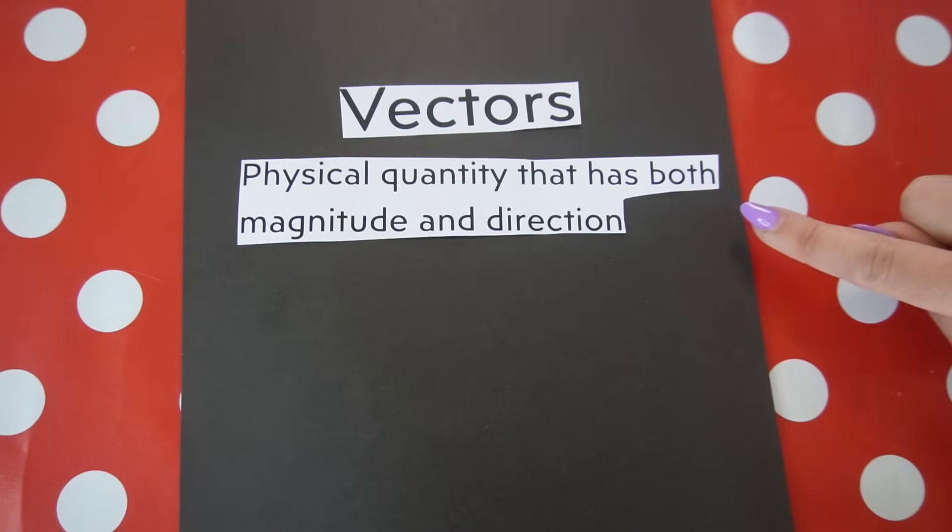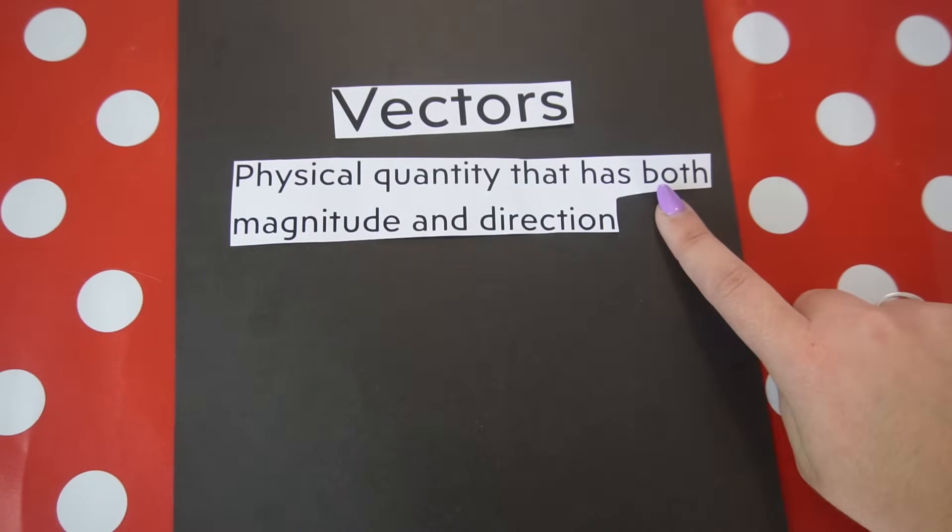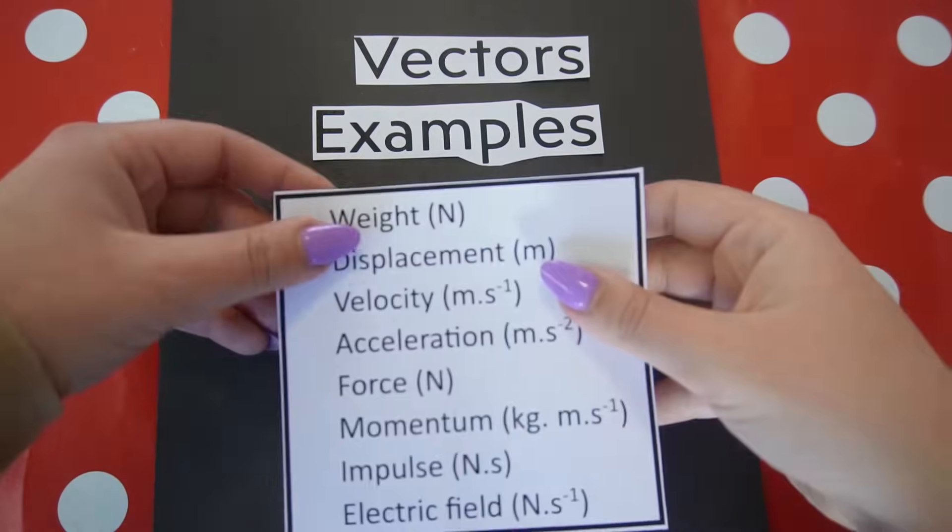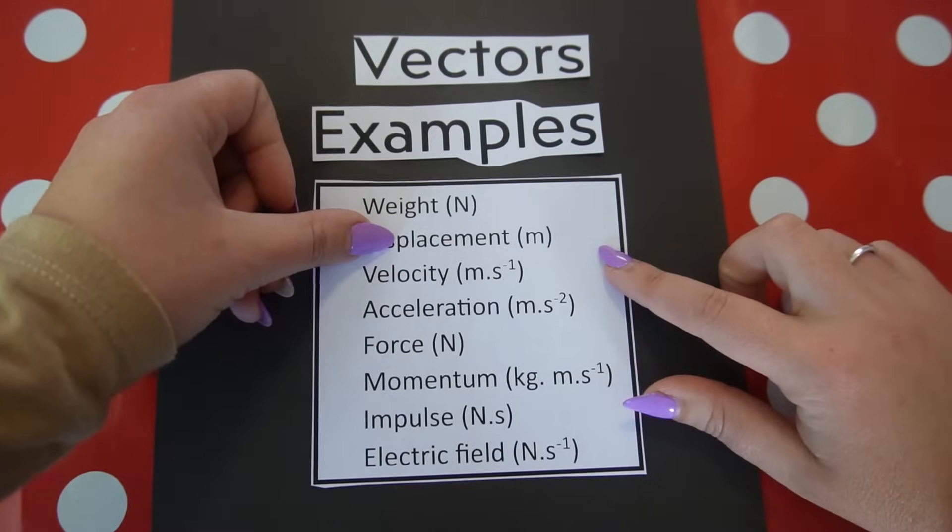Vectors, on the other hand, are physical quantities that have both magnitude and direction. For example, if you've calculated the velocity of a vehicle and you answer by saying the velocity was 120 kilometers per hour, your teacher will mark that incorrect because you did not state a direction. The correct answer would be: the velocity of the car is 120 kilometers per hour to the right, or in the positive direction.